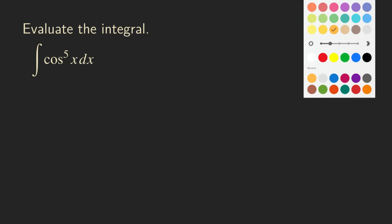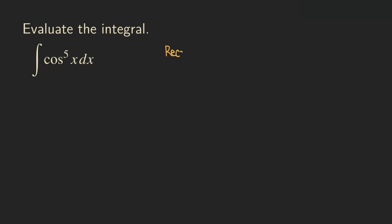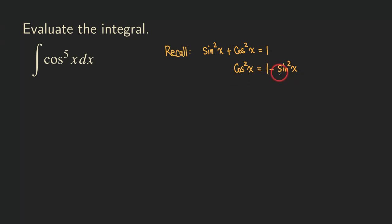First, we will need the trig identity, which is the Pythagorean identity. So if we have sine squared x plus cosine squared x, that's equal to 1. We also need to manipulate this equation so that we can rewrite cosine squared x as 1 minus sine squared x. So I subtracted the sine squared x from both sides, getting cosine squared x equals 1 minus sine squared x. We are going to need this expression.